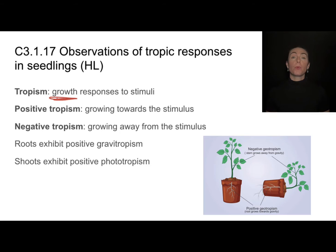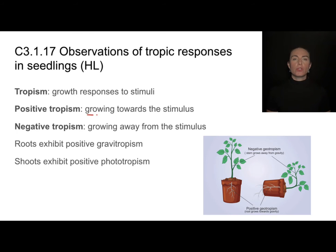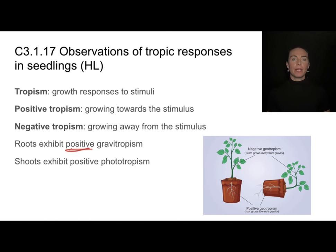Tropisms are growth responses to a certain stimulus, and they can either be positive or negative. Positive tropisms mean that the plant is growing towards the stimulus. For example, roots exhibit positive gravitropism — they are going in the same direction as gravity. Roots will always grow downwards, even if you tip the plant over on its side.